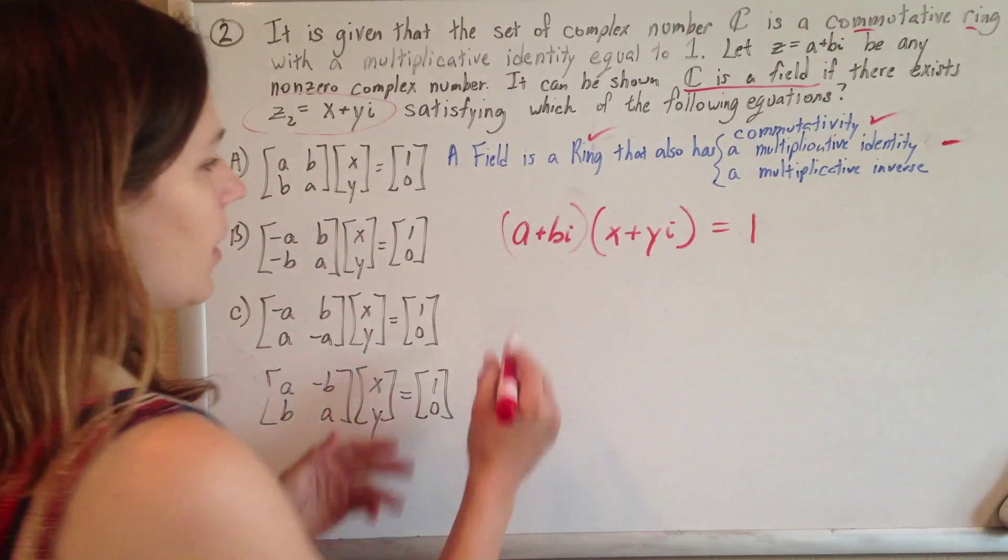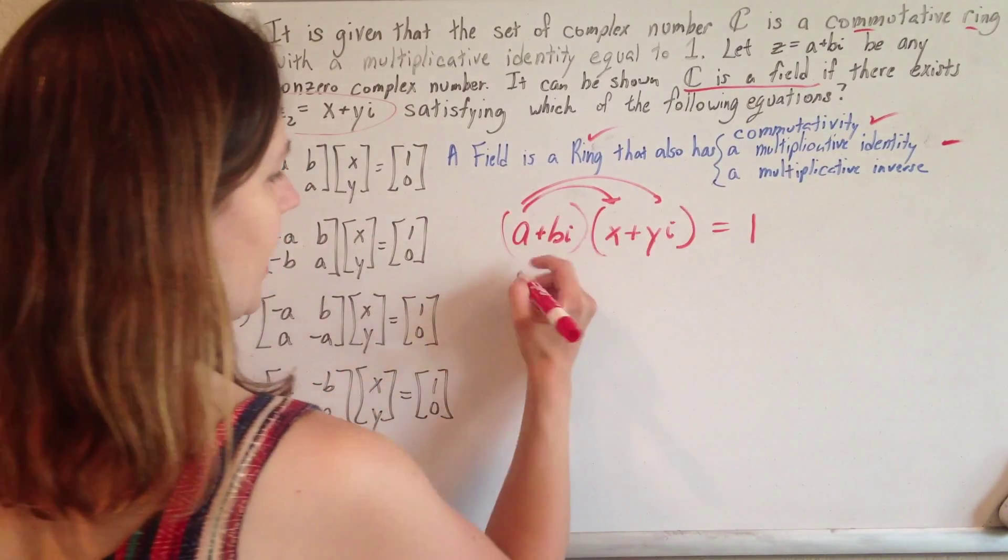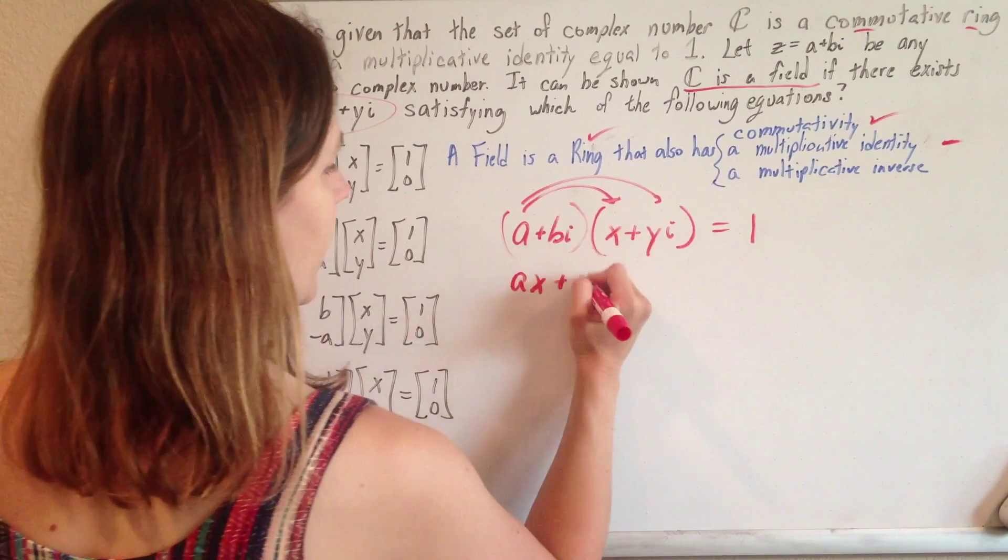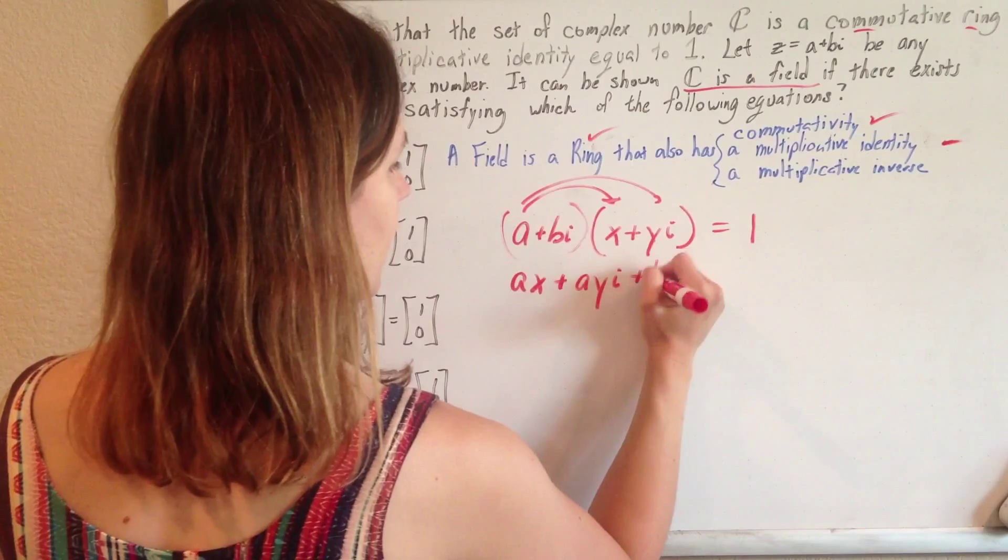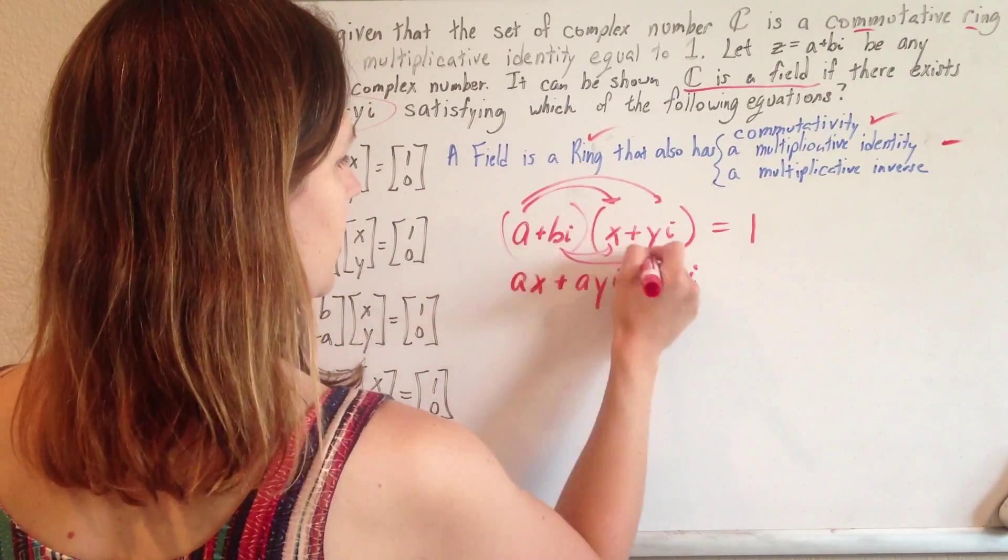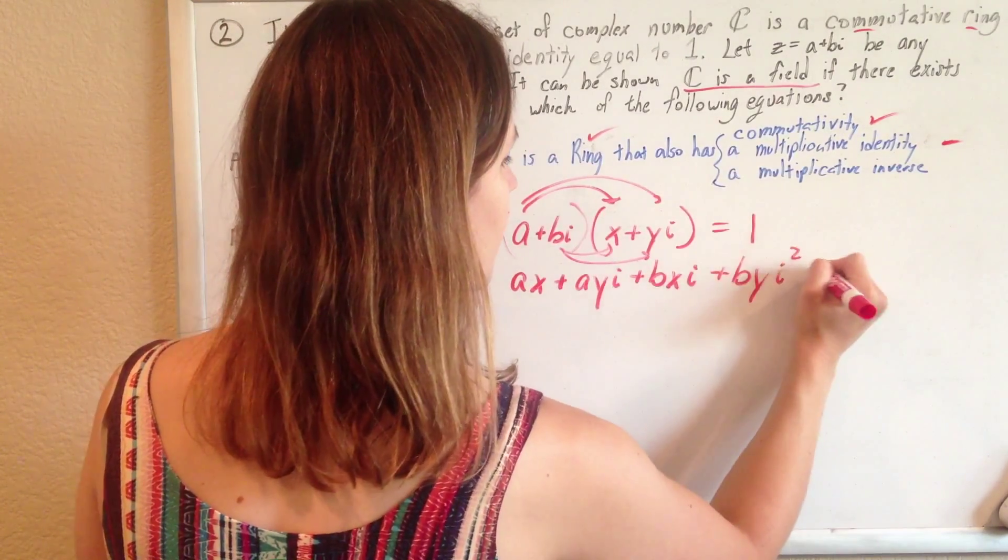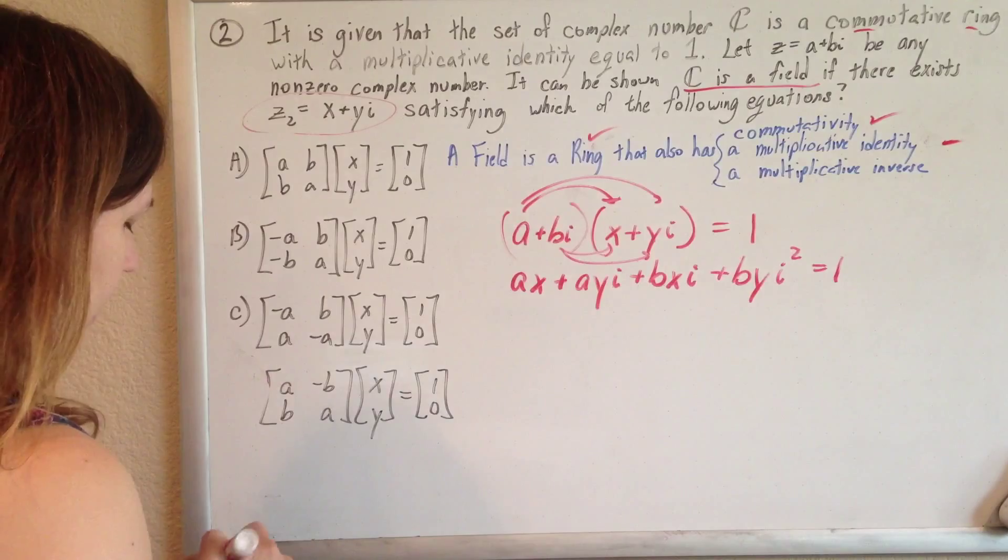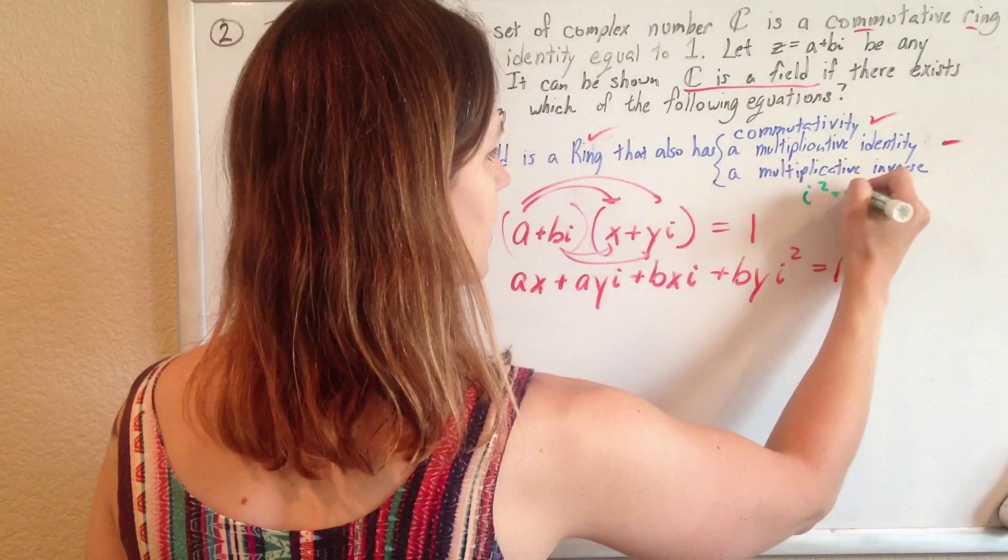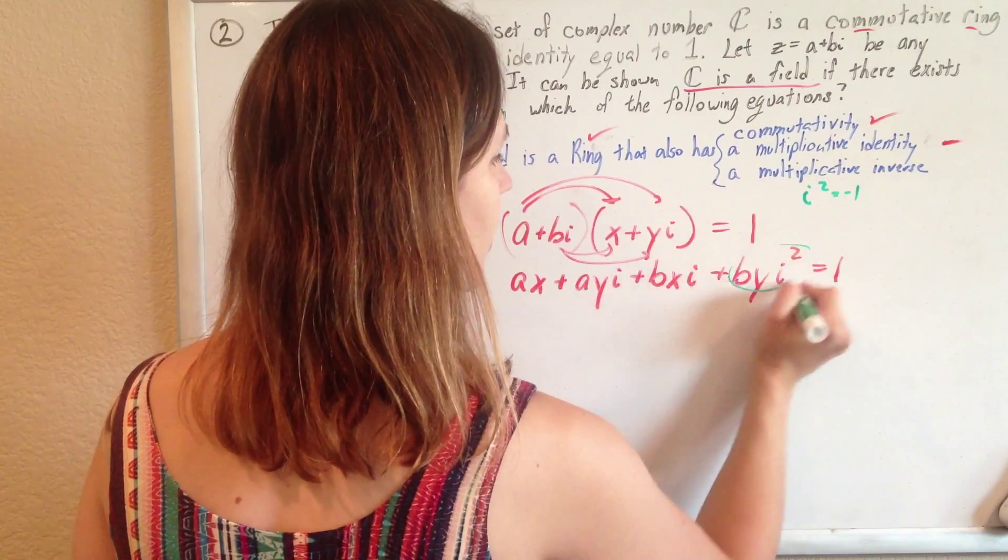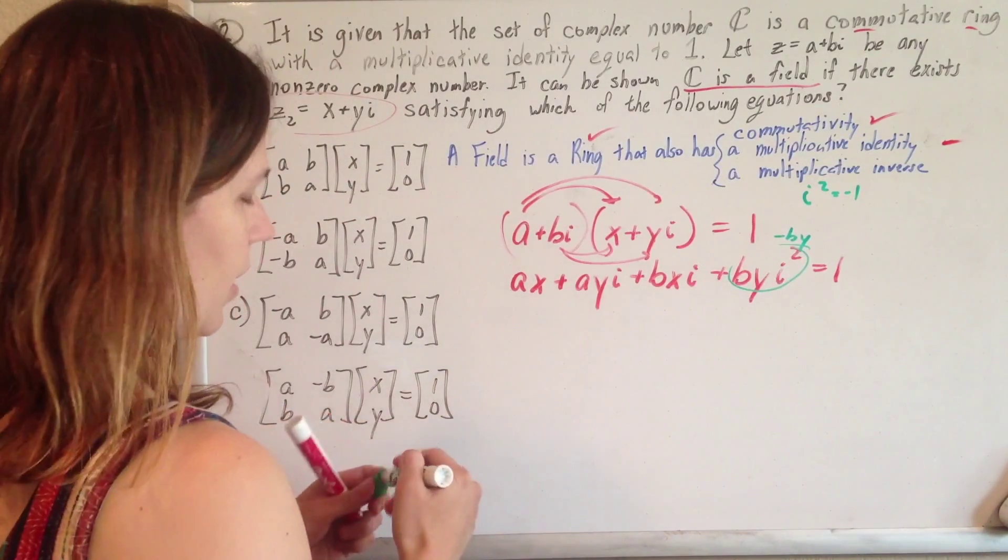There we go. We'll start by distributing. So we'll have ax plus ayi, and then plus bxi, and then plus byi squared. And we see that i squared, and we know that i squared is negative 1. So since i squared is negative 1, this part is just negative by. b times y times negative 1 is negative by.